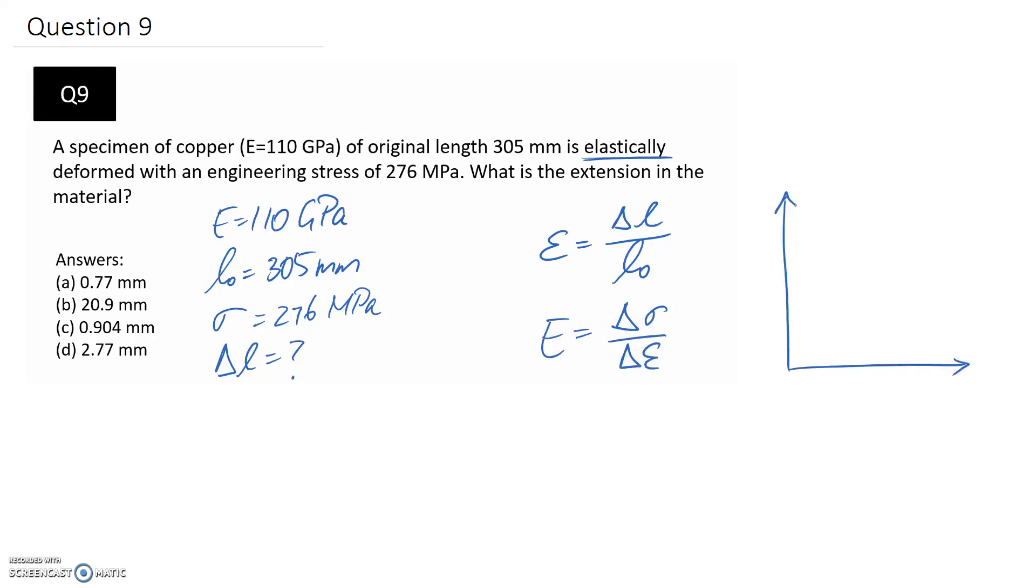If we were to draw our diagram, we know it's a straight line relationship where the gradient of this line is E. So that's going to be our path to solving the question. First I'm going to use this equation in order to find the strain and then I'll go back and use this equation to find the change in length.